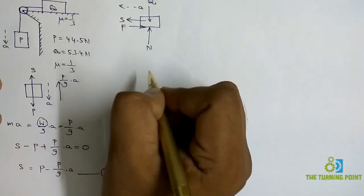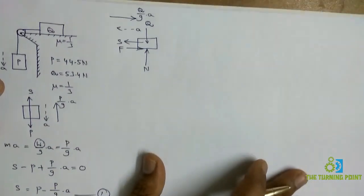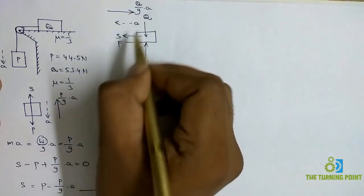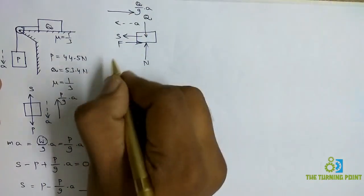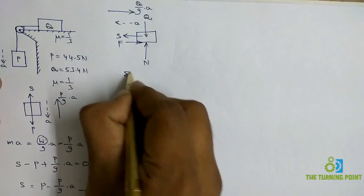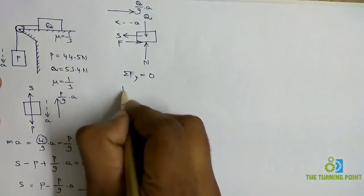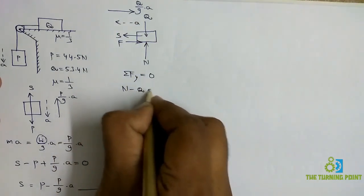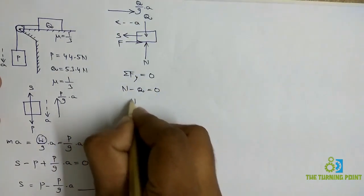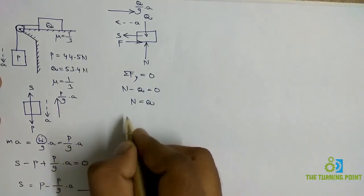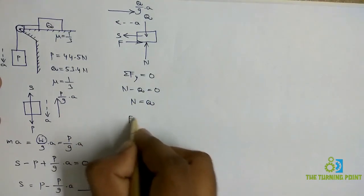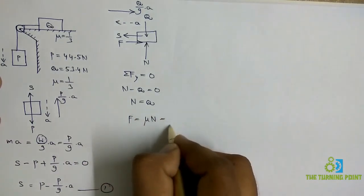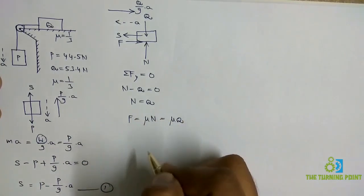Apply sigma Fy equal to 0: N acting vertically upwards and Q acting vertically downwards gives N equal to Q. To calculate the frictional force: F equals mu times N. Substituting N equals Q, we get F equals mu·Q.